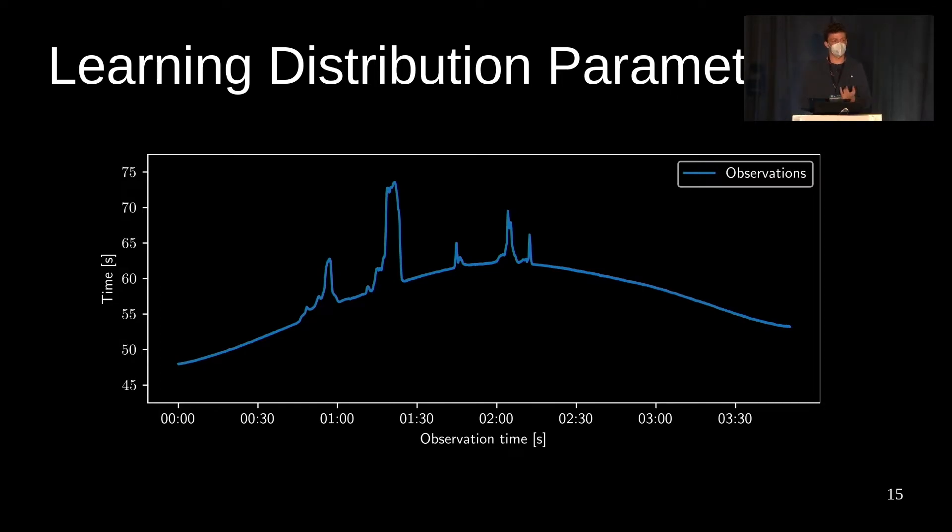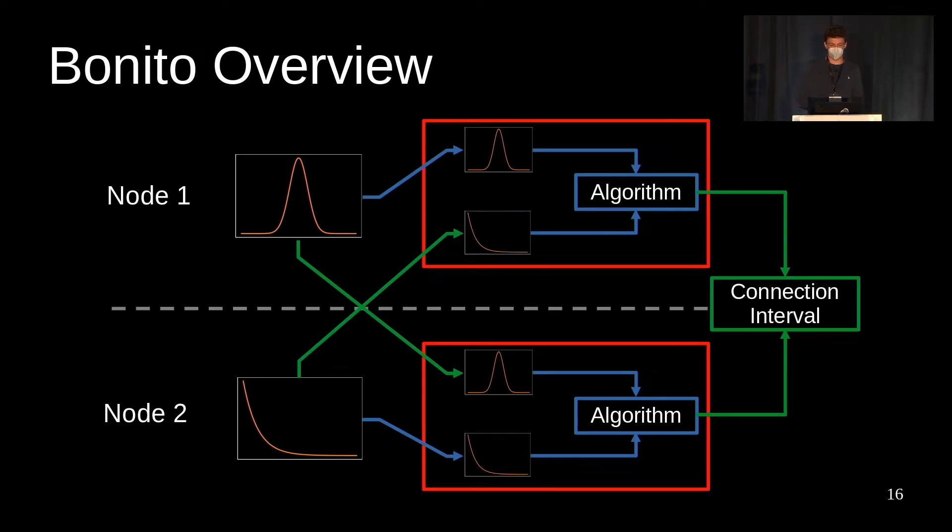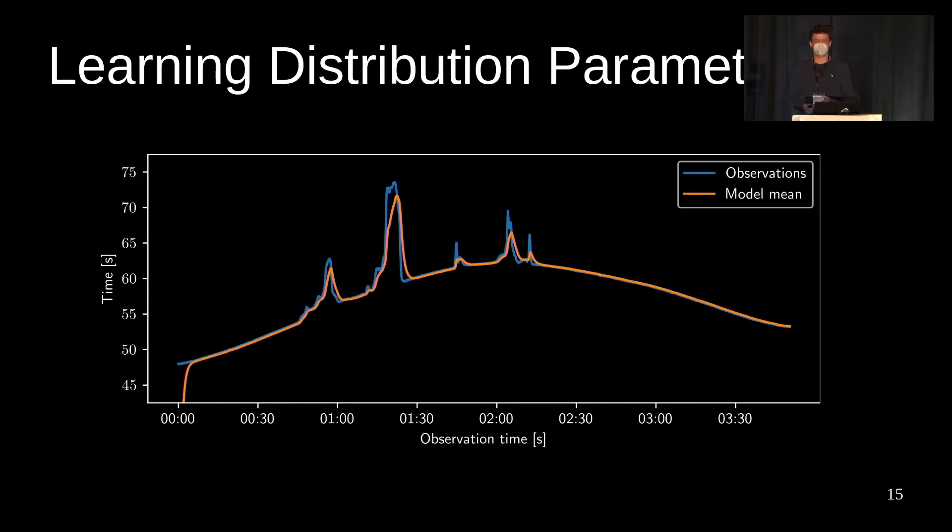To account for such non-stationarities, Bonito uses stochastic gradient descent to learn and track the parameters against changes of the energy environment. Each node observes their own charging time and updates the distribution's parameters with every new observation. Here you see the mean of a normal distribution model that is continuously adjusted using stochastic gradient descent. It takes less than one minute until the parameters converge from their initial values to the true distribution parameters. This approach is generic, and we tested it with a normal distribution, an exponential distribution, and a Gaussian mixture model with two components.